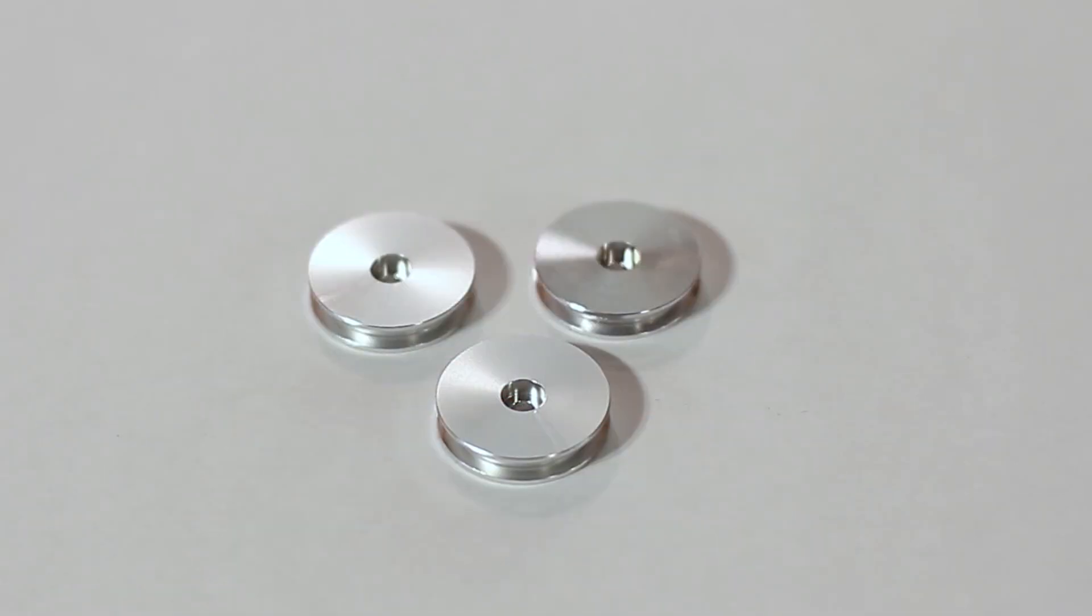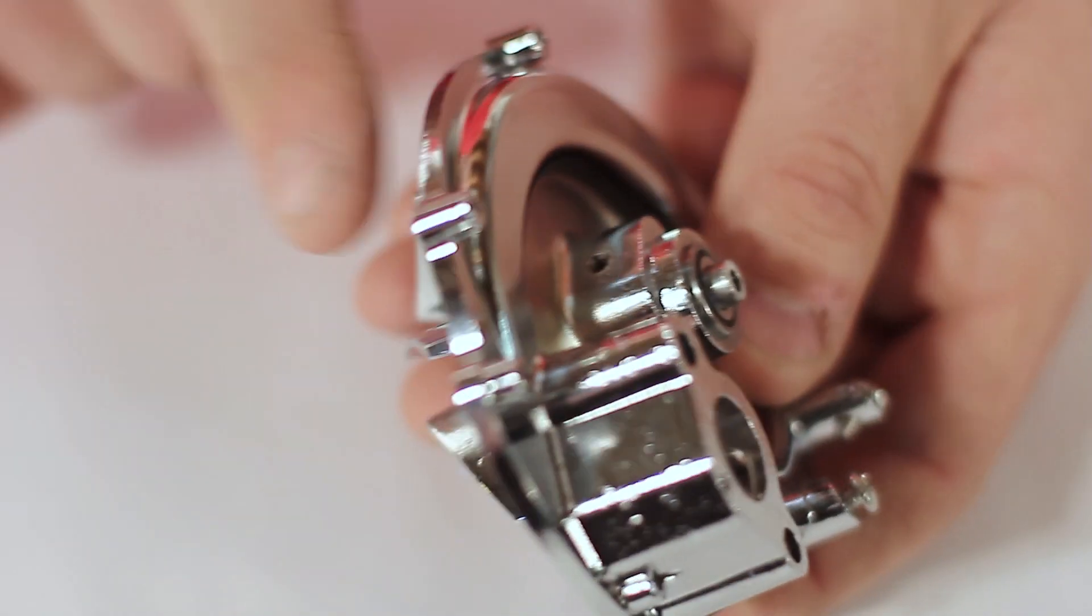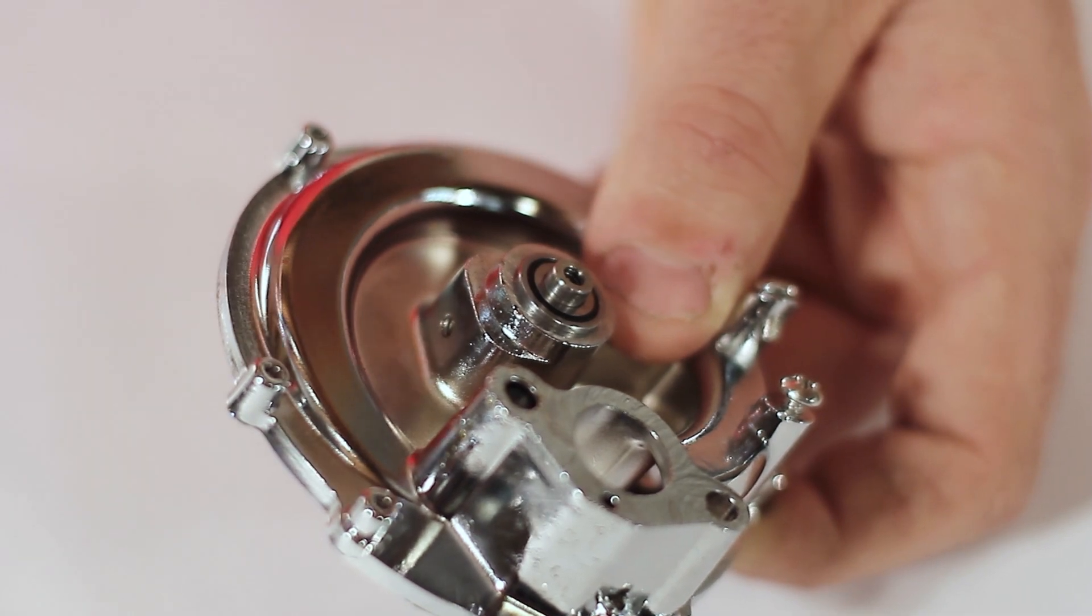An optional upgrade for the supercharger are overdrive pulleys. We sell them in a set of three. At this step, it's a perfect time to install the overdrive pulley to the supercharger. One critical thing you never want to do is remove the shaft from the impeller. Those are dynamically balanced, and you don't want to remove that.